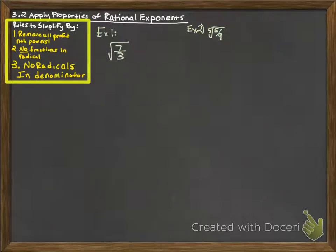In this video, we're going to talk about section 3.2, applying the properties of rational exponents. In this section, we're going to talk about a lot of things, the biggest one being simplifying radicals.